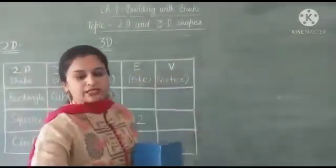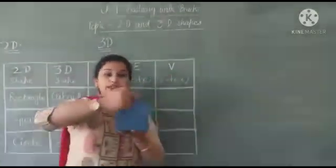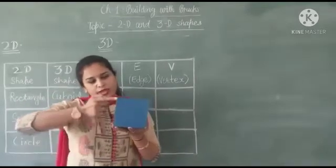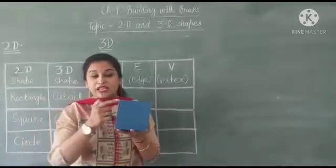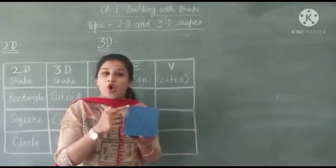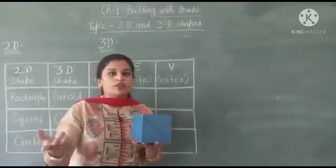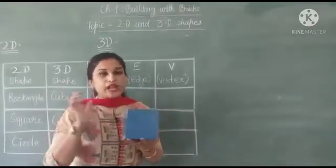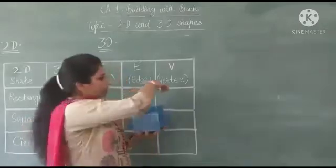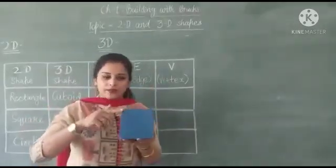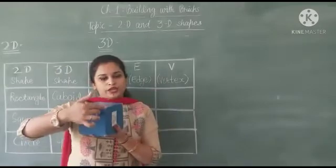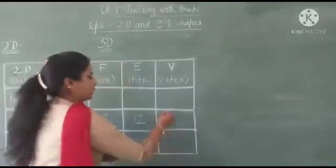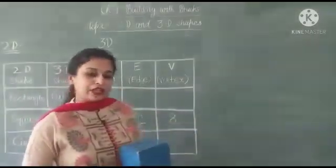Now we are coming to vertex. What are vertex? Where 3 edges meet. 1 edge, 2 edge and 3 edge. These 3 edges are meeting at a point. They are called vertex. And the plural of the vertex is vertices. Now we are joining and we are adding all the vertices. And we will count it. 1, 2, 3, 4, 5, 6, 7, 8. So how many vertex we got? 8 vertices in cube.